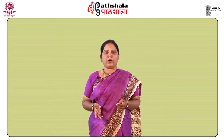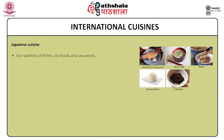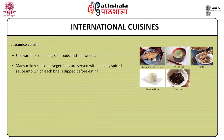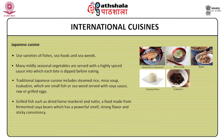Japanese cuisine: the Japanese use varieties of fish, seafood and seaweed. They also make use of tender sprouts and leaf tips of many plants. Many mildly seasoned vegetables are served with a highly spiced sauce into which each bite is dipped before eating. Traditional Japanese cuisine includes steamed rice, miso soup, tsukudani with small fish or seaweed served with soya sauce, raw or grilled egg, grilled fish such as dried horse mackerel, and natto, a food made from fermented soya beans with a powerful smell, strong flavour and sticky consistency.